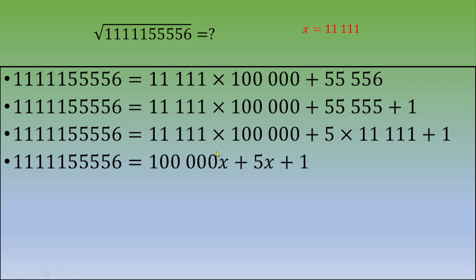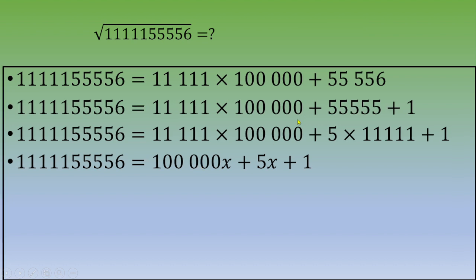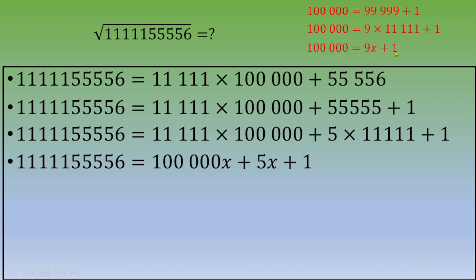Now let's transform this quantity. One hundred thousand can be written as ninety-nine thousand nine hundred ninety-nine plus one, which is nine times eleven thousand one hundred eleven plus one. That is actually nine x plus one.